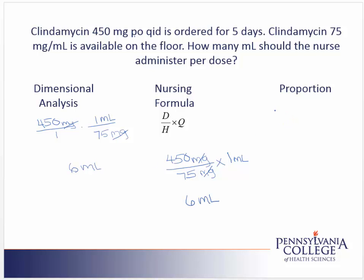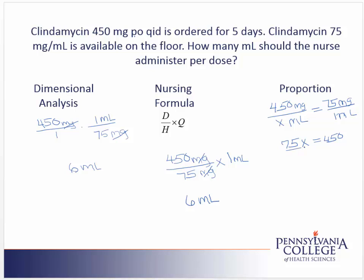The final approach we can use is a proportion, which uses equal fractions. The first fraction is made by placing the ordered amount, 450 milligrams, over x milliliters, because we want to change this amount into milliliters. Since we're making equal fractions, we need milligrams on the top and milliliters on the bottom, so that the labels match. Available to us is 75 milligrams per one milliliter. To solve this, we cross multiply. On the first diagonal, I get 75x. On the second diagonal, 450 times 1 is equal to 450. I continue solving by dividing by 75 on both sides, to get my answer: x equals 6 milliliters.